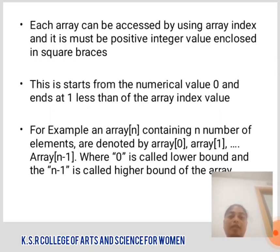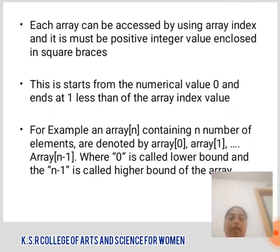The Array index starts from the value 0 and ends with less than one of the Array size. For example, an Array of N containing N number of elements is denoted by Array[0], Array[1], ..., Array[N-1], where 0 is called the lower bound and N-1 is called the higher bound of the Array.